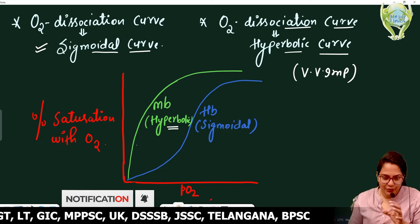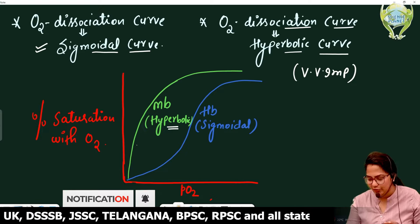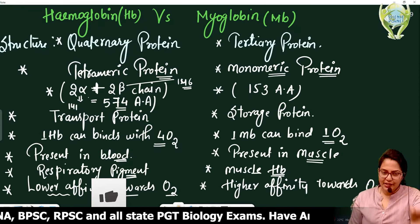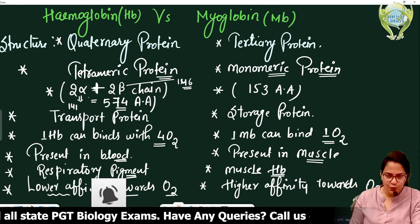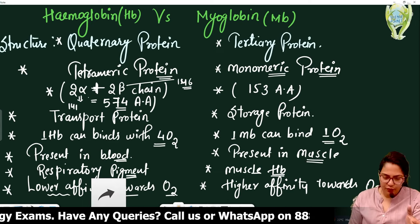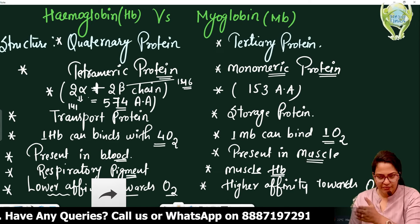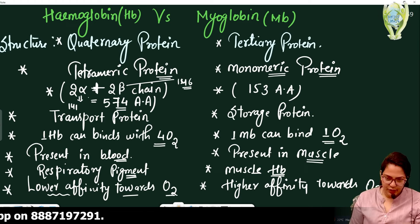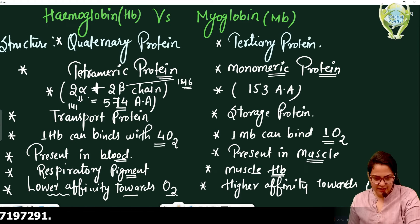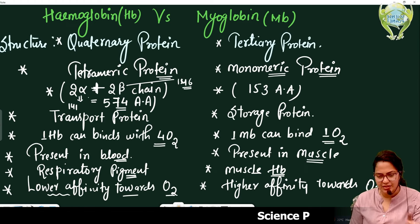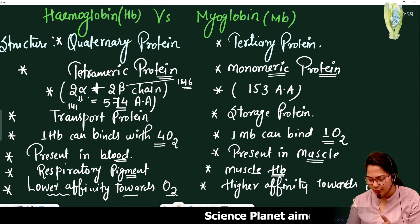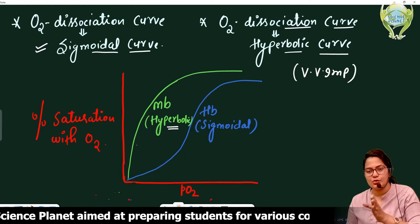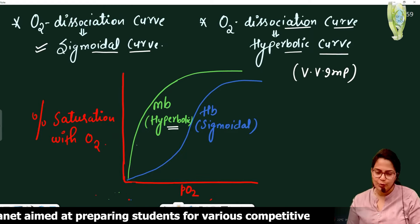I hope सारे differences अच्छे से समझ में आ गए। Once again to recap: hemoglobin is quaternary, myoglobin is tertiary; hemoglobin is tetrameric, myoglobin is monomeric; hemoglobin is a transport protein, myoglobin is a storage protein; hemoglobin binds 4 oxygen molecules, myoglobin binds 1; hemoglobin is present in blood, myoglobin is present in muscle; hemoglobin is a respiratory pigment, myoglobin is muscle hemoglobin; hemoglobin has lower affinity for oxygen, myoglobin has higher affinity; hemoglobin's oxygen dissociation curve is sigmoidal, myoglobin's is hyperbolic.